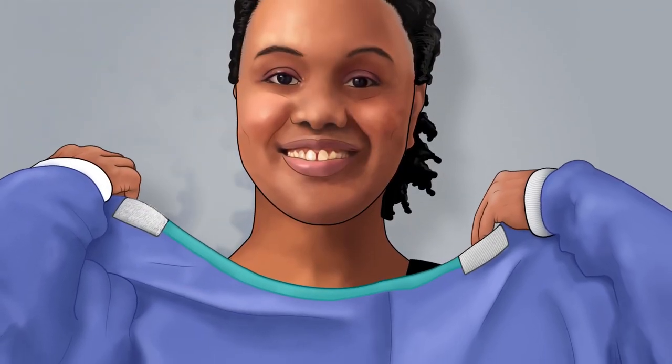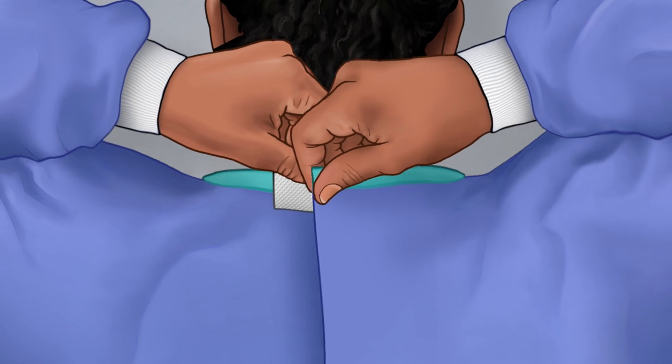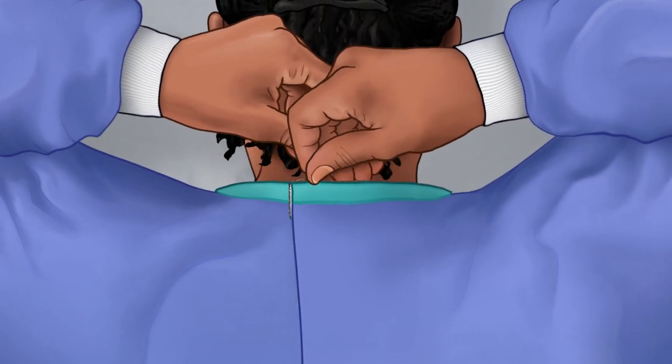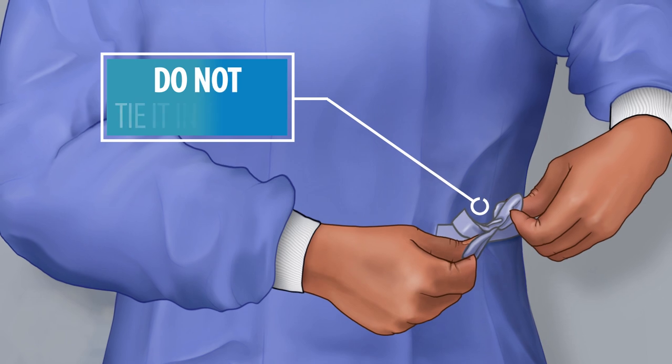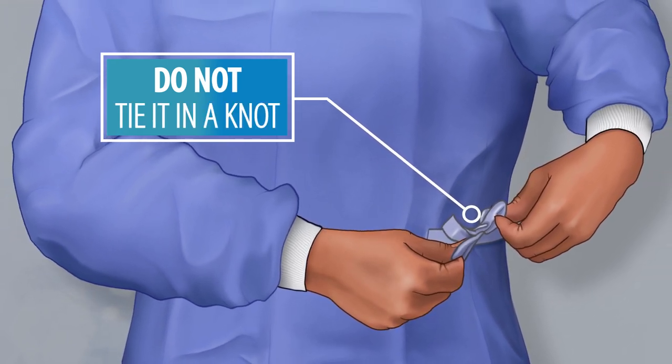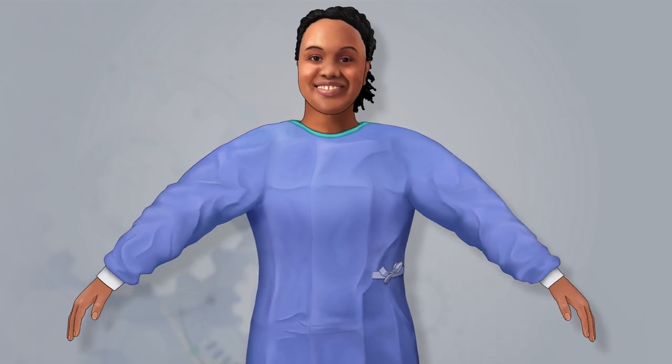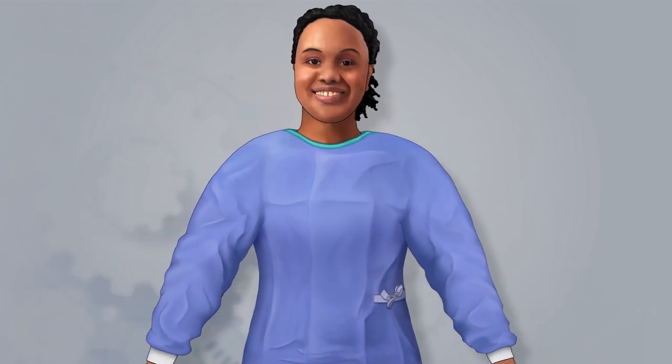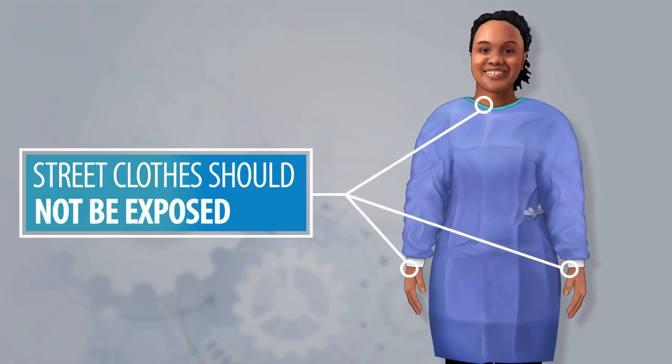Next, pull on the gown, fastening it securely behind your neck and back or side. Do not tie it in a knot or fasten it so tightly that you cannot easily remove it later. Make sure the gown fits well to allow for easy movement. Street clothing should not be exposed.